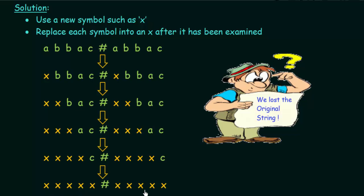The original string was a, b, b, a, c, hash, a, b, b, a, c — but we lost it at the end of our computation. We are left with only x's followed by hash followed by more x's. So we have lost the original string, and this is the disadvantage of this method.